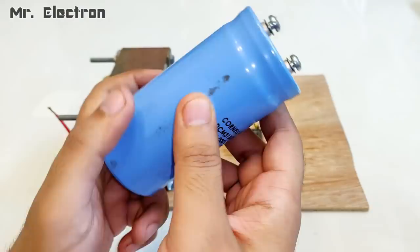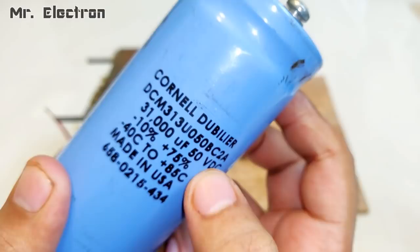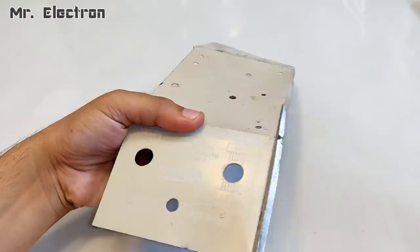Now guys, I'm going to use this DC capacitor—31,000 microfarad and 50 volts DC—to improve the output DC line from this transformer.